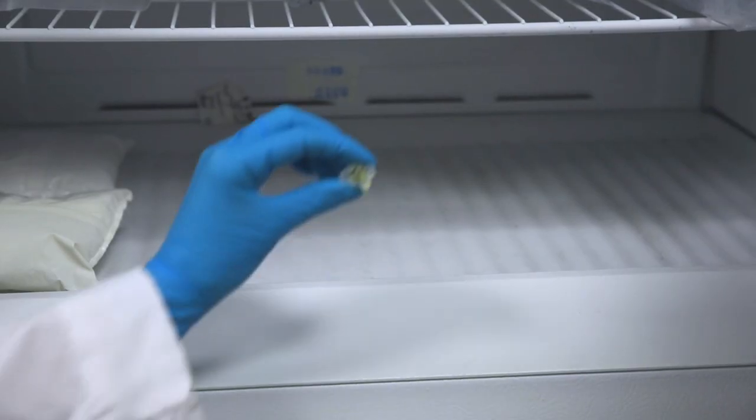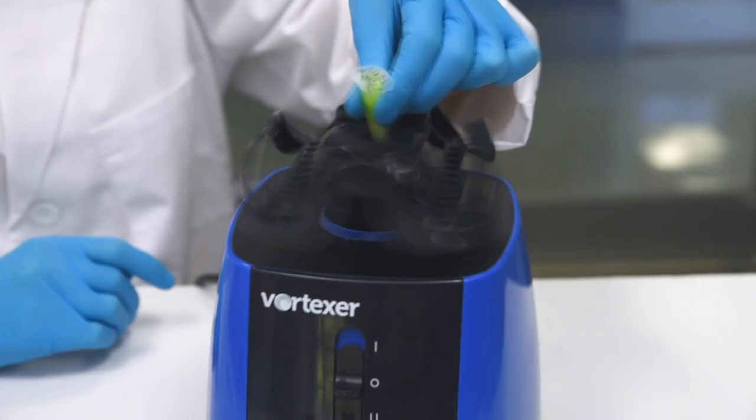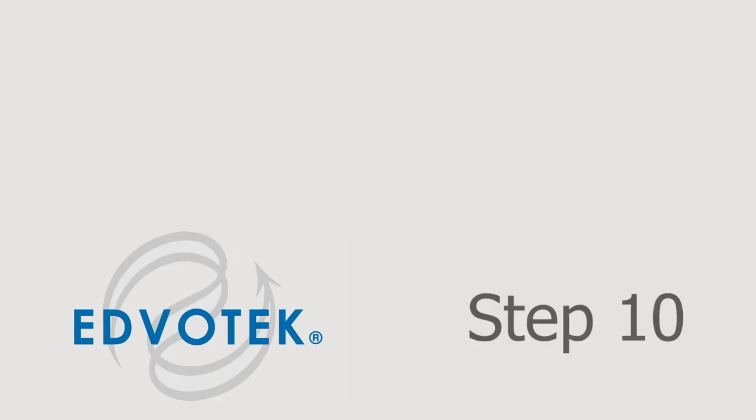Step 9: Repeat steps 6 through 8 two more times. Freezing and thawing will help the cells to lyse.